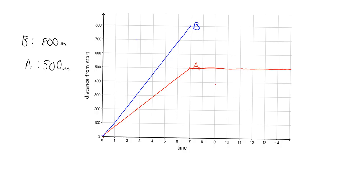You can read all sorts of information from this graph. I can ask you: how far had B walked in one minute? You'd look at B - the blue graph - and after one minute, the distance value is 100 meters. I could also ask that question the other way around: how long did it take B to walk 100 meters? In that case, you'd look at where 100 meters is on the graph and read the time off as one minute. So there's plenty of information you can read off a graph.